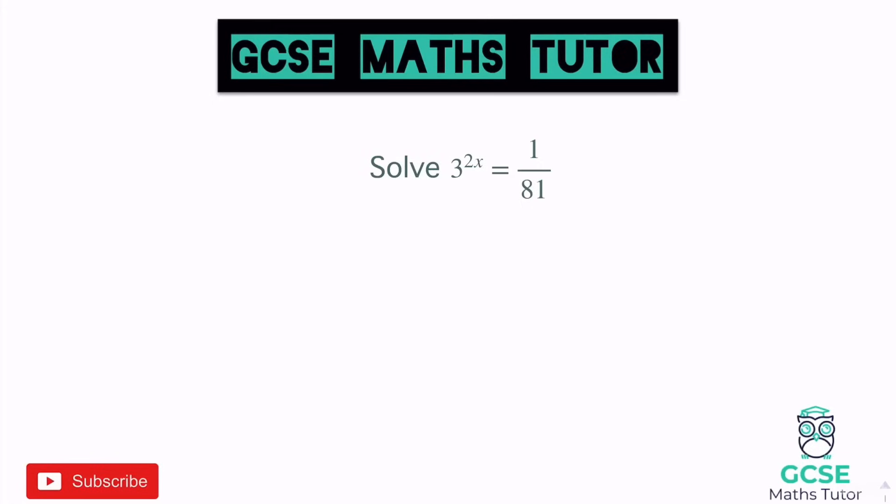This first question is definitely the easiest out of the bunch. We're going to look at it first to discuss the concept and see how these questions are written. It says: solve 3 to the power of 2x equals 1 over 81. Make sure you grab a piece of paper and a pen and make some notes.